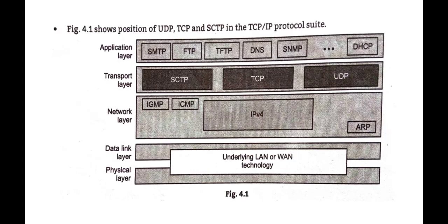Looking at the diagram for the TCP/IP protocol suite, this model has four layers total. The first layer combines physical and data link layers, representing underlying LAN and WAN technologies. Above that is the network layer, which is the second layer of the TCP/IP protocol suite, and which we covered in Unit 3.